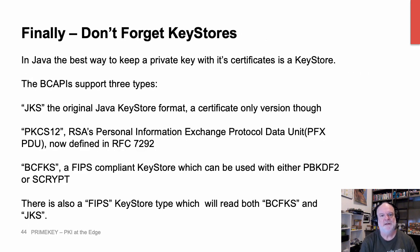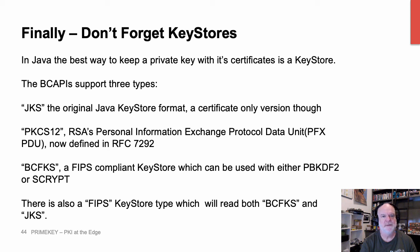Finally, having gotten to the end of this, our last topic is key stores. The reality in Java is that, while we've talked about encrypting private keys by hand and storing them in PEM files, the best way to deal with a private key often is to keep it with its certificates and use a key store. The Bouncy Castle APIs support three types of key stores. They actually do support a JKS key store, but it's a certificate-only version — storing a private key in a JKS key store in FIPS is a non-starter, but if all you're doing is storing certificates it's fine.